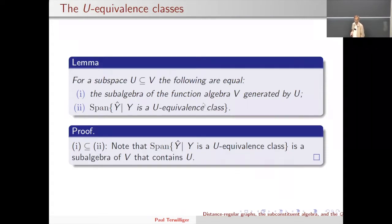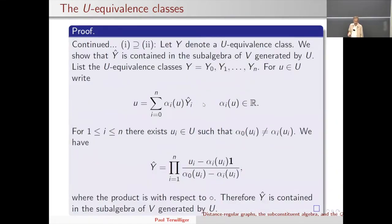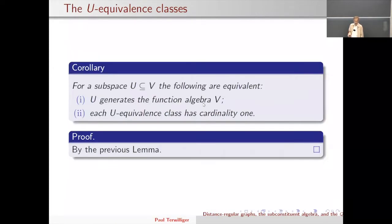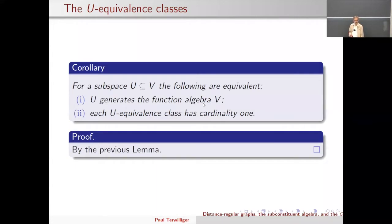For any subset Y of the vertex set X, define capital-Y-hat to be the sum of the vertex vectors y-hat, where y ranges over all vertices in Y — think of it as the characteristic vector of the subset. For a subspace U of V, the subalgebra of the function algebra generated by U equals the span of the capital-Y-hats as Y ranges over U-equivalence classes. In other words, the characteristic vectors of the equivalence classes form a basis for the subalgebra generated by U. The proof is just linear algebra — I'll leave it as an exercise.